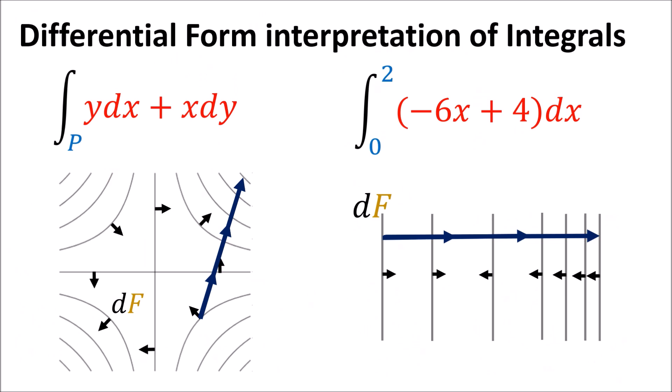What we've shown is that there's a new way to think about these integrals — instead of computing an area under a curve, we think in terms of a covector field and a path, counting the number of covector curves the path pierces. As I mentioned in the last video, this interpretation is really nice because it doesn't depend on any coordinate systems. These paths and covector fields are geometric objects that don't depend on our choice of coordinates.